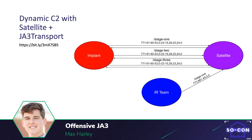This makes blue teamers jump through many more hoops if they want to reverse engineer your payload. In the same vein, you can key proxy traffic so that it's much more difficult for blue teamers to discover your C2 infrastructure.